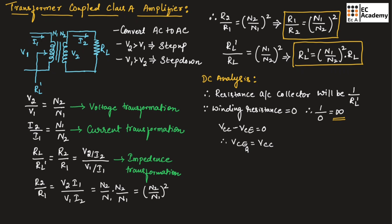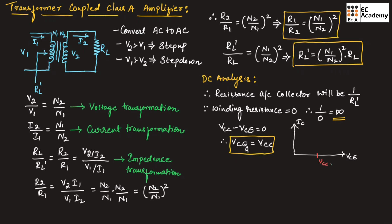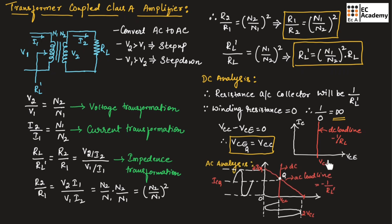So VCE at the Q point will be equal to VCC. We have two points: VCE at Q point is VCC and IC at Q point is infinity. If we draw the DC load line, we get VCE at VCC. The slope of this DC load line is equal to 1 by RL. Similarly, we can draw an AC load line which has a slope of 1 by RL dash.